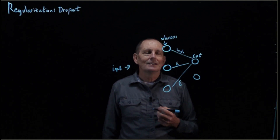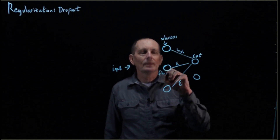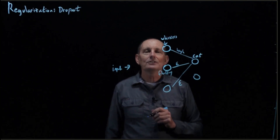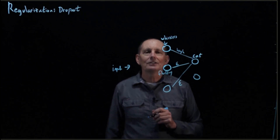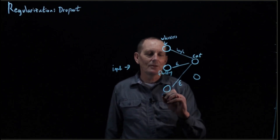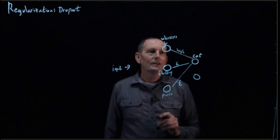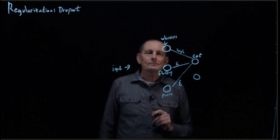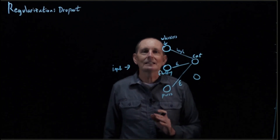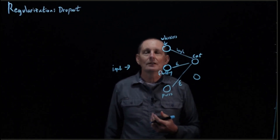It would be good if it were also learning to use other features that might be useful — for instance, the fluffy feature. Or there might be another feature like purrs if it's a movie. So the idea is that we are going to selectively provide amnesia in our neural network as we're training.